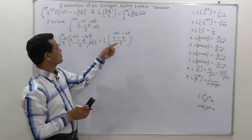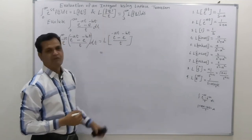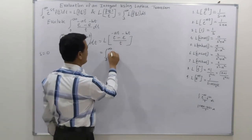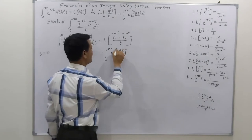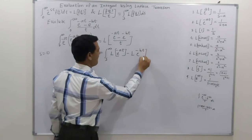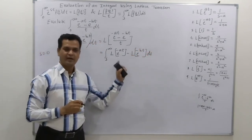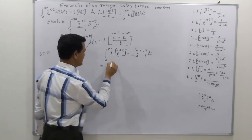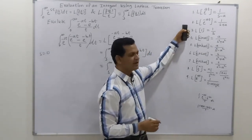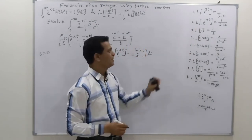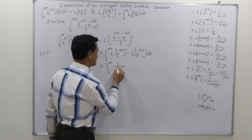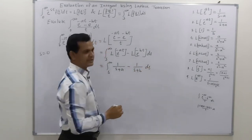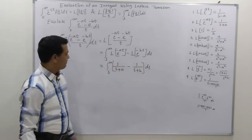According to the division by t property we write: ∫ₛ^∞ [L{e^(-at)} - L{e^(-bt)}] ds. Using the linearity property we split into two parts. The standard result gives L{e^(-at)} = 1/(s+a), so we write this as ∫ₛ^∞ [1/(s+a) - 1/(s+b)] ds.